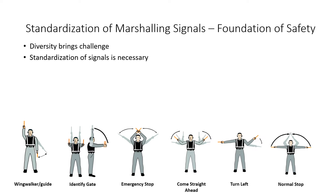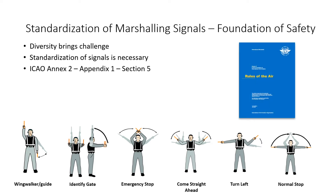Marshalling signals are the same no matter where you are in the world. These marshalling signals are defined in International Civil Aviation Organization Annex No. 2, titled Rules of the Air. Airports around the world follow the same signaling convention so that there does not remain any chance of confusion between marshallers and pilots resulting in any sort of a ramp accident. This is how the safety of the ramp is integrated into policy documents and standard procedures.